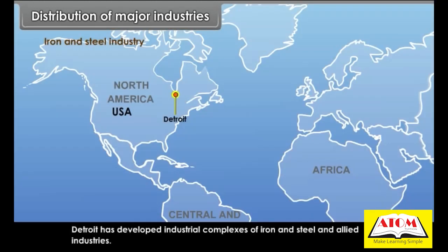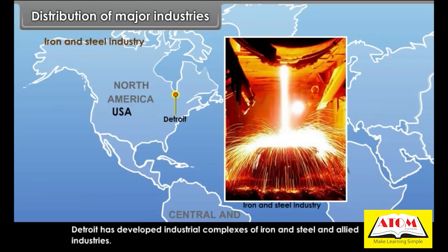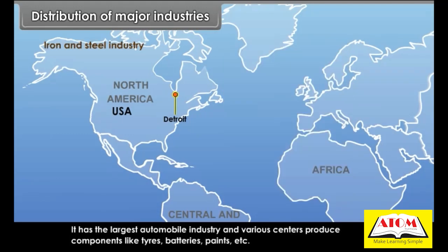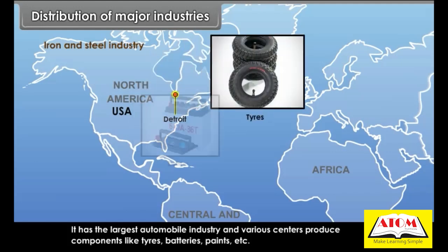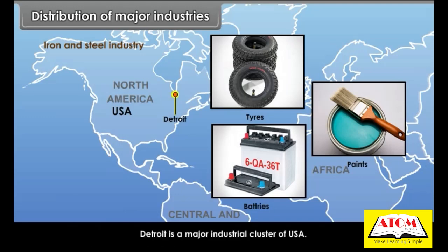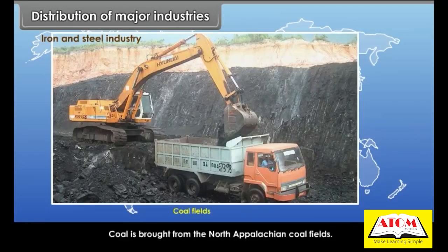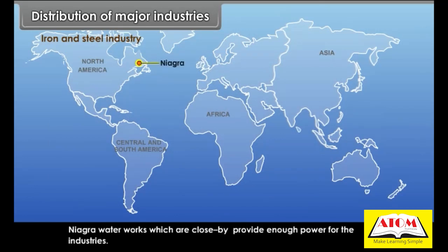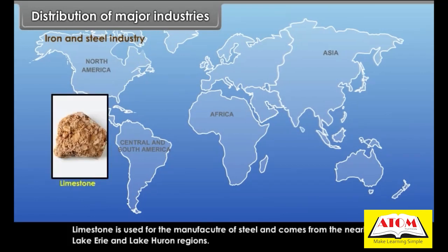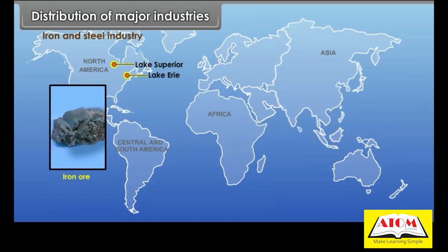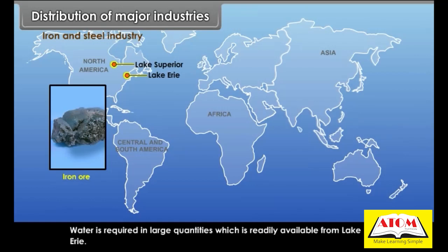Detroit has developed industrial complexes of iron and steel and allied industries. It has the largest automobile industry, with centres producing components like tyres, batteries, and paints, making it a major industrial cluster of the USA. Its growth is due to locational advantages: coal from North Appalachian coalfields, power from Niagara, limestone from Lake Erie and Lake Huron regions, iron ore from the Lake Superior region, and water from Lake Erie.